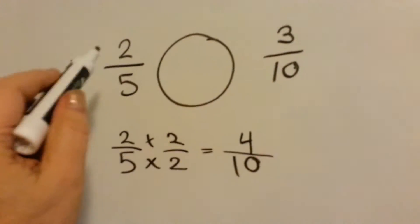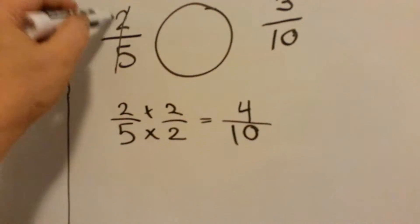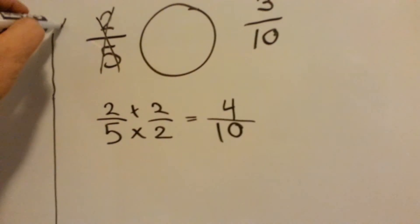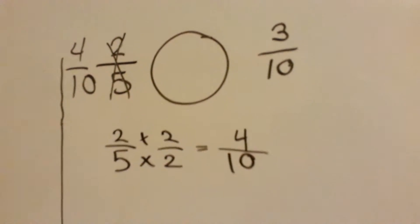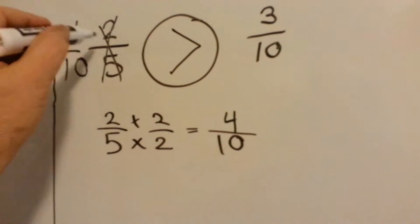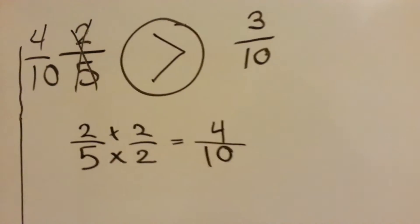So we know that the 2 fifths can be changed to 4 tenths. Now, can you see which one's bigger? Yeah, the 4 tenths. The 2 fifths, the original number was bigger.